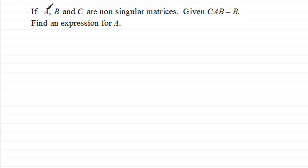We've got three matrices, A, B, and C, which are non-singular matrices. We're given that C times A times B equals B, and we've got to find an expression for A.